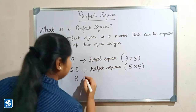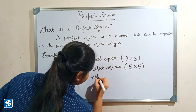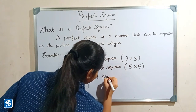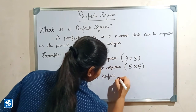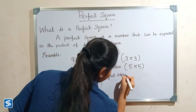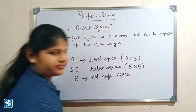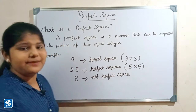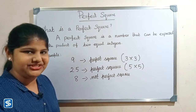Eight is not a perfect square because eight cannot be expressed as the product of two equal integers.